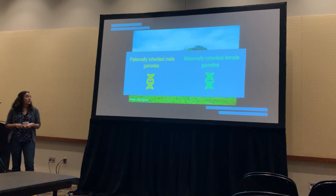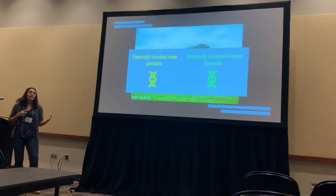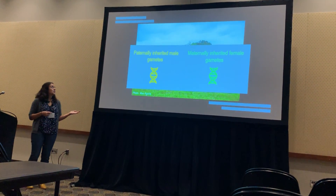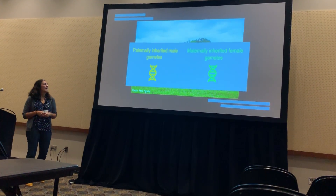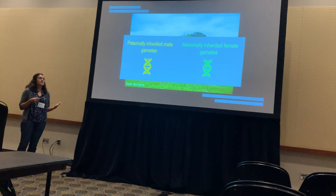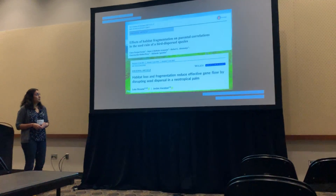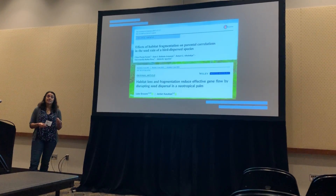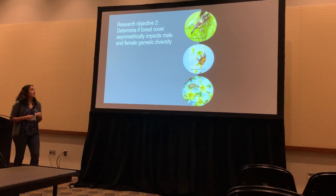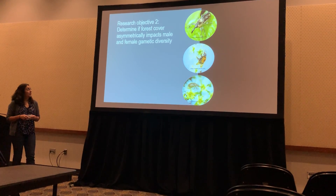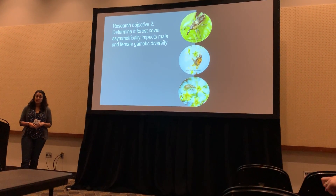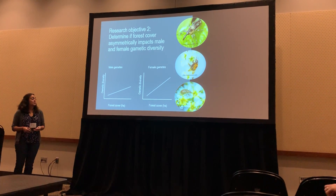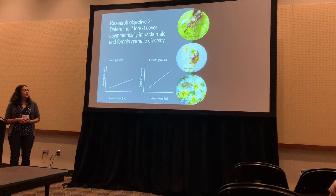The second gap in our knowledge is related to how forest loss might be impacting maternally inherited female gametes compared to paternally inherited male gametes differently. We know that these different types of gametes influence micro-evolutionary processes differently. A few studies have addressed this and have generally found that female gametes seem to be more sensitive to forest loss. So my second research objective is to determine if forest cover asymmetrically impacts male and female genetic diversity. My prediction is that while I would expect both male and female gametes to have a positive association with forest cover, the relationship with female gametes will be a little bit stronger.